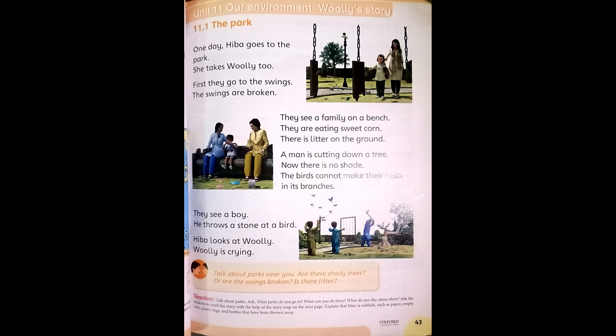Now come to the reading. One day Hiba goes to the park and she takes Woolly with her. Who is Woolly? Woolly mammoth is a toy. One day Hiba went to the toy shop with her mama, she saw the Woolly mammoth and bought it. So when she goes to the park, she takes her toy with her.